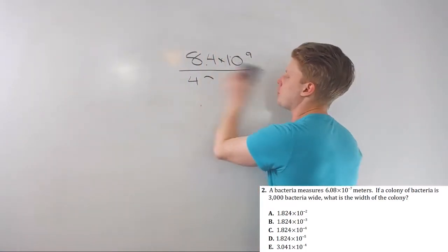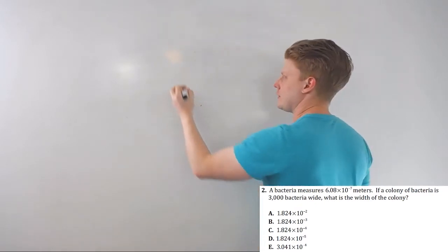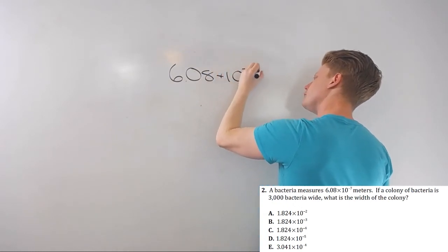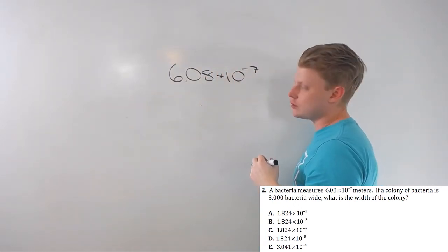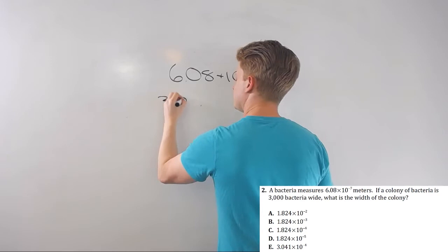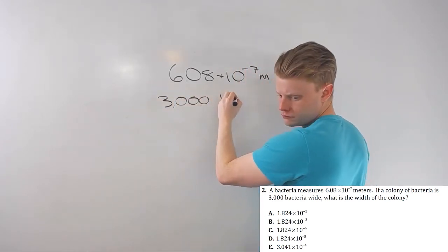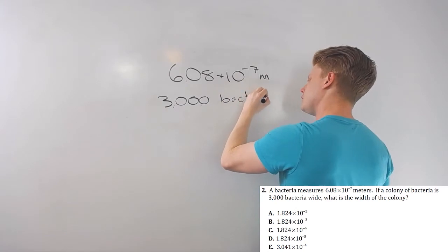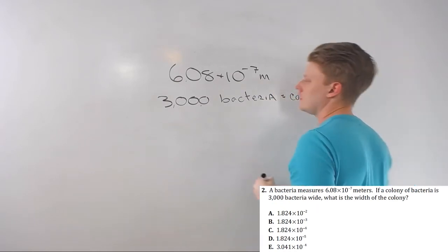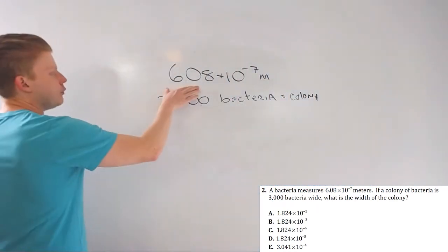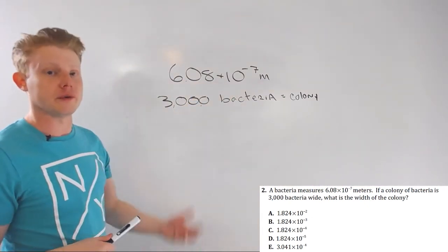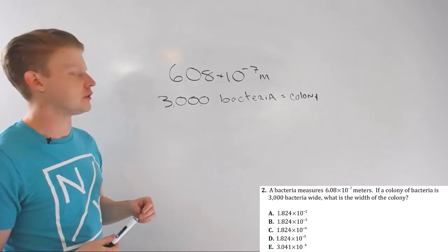Let's look at this bacteria problem. Bacteria colony measures 6.8 times 10 to the negative seventh meters. Colony bacteria is 3,000 bacteria wide. Is equal to a colony. A single bacteria is this big. There's 3,000 of them. It's a word problem. This is a pretty common setup for a slightly more difficult scientific notation, decimal sort of question.